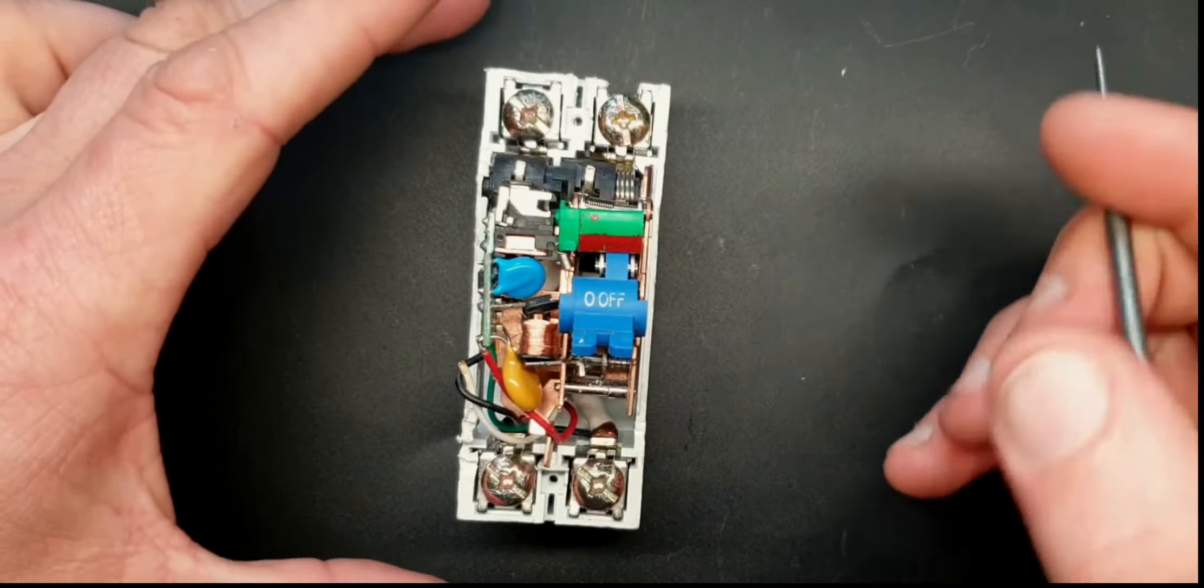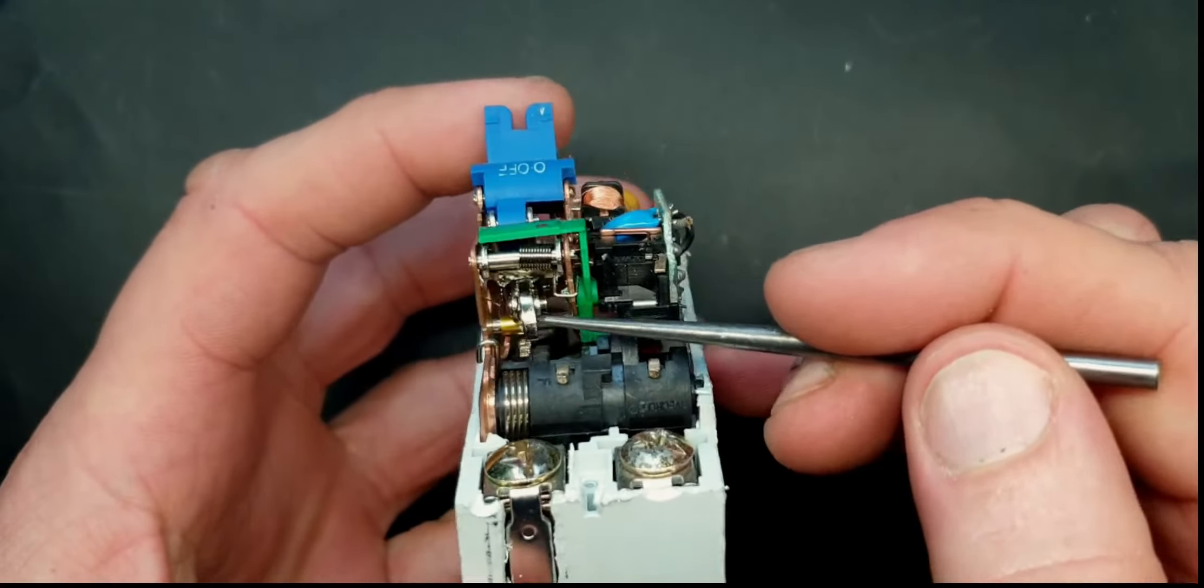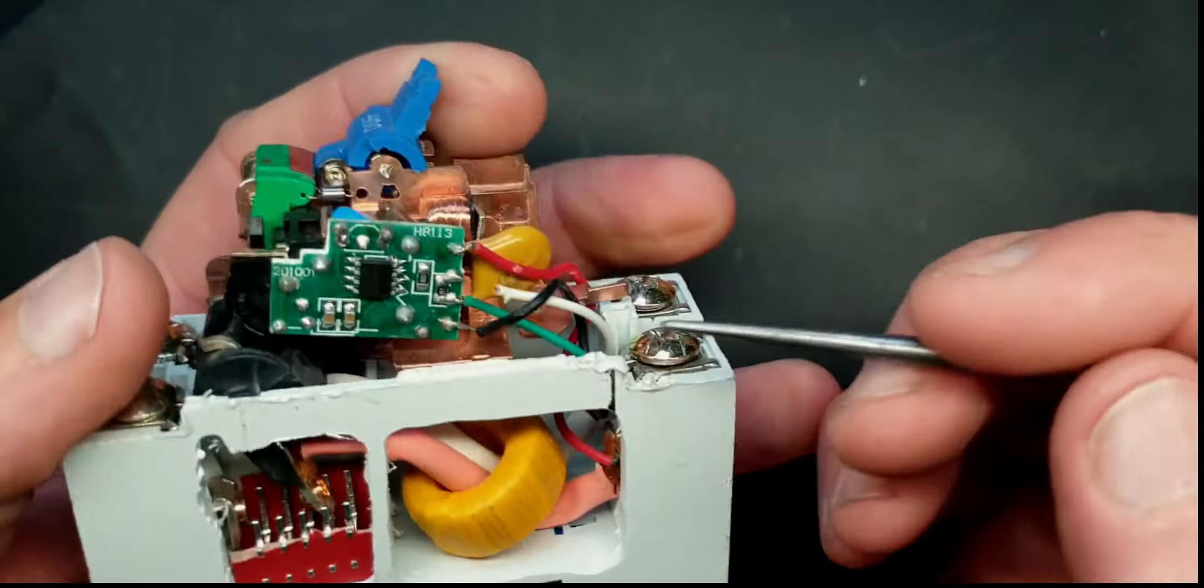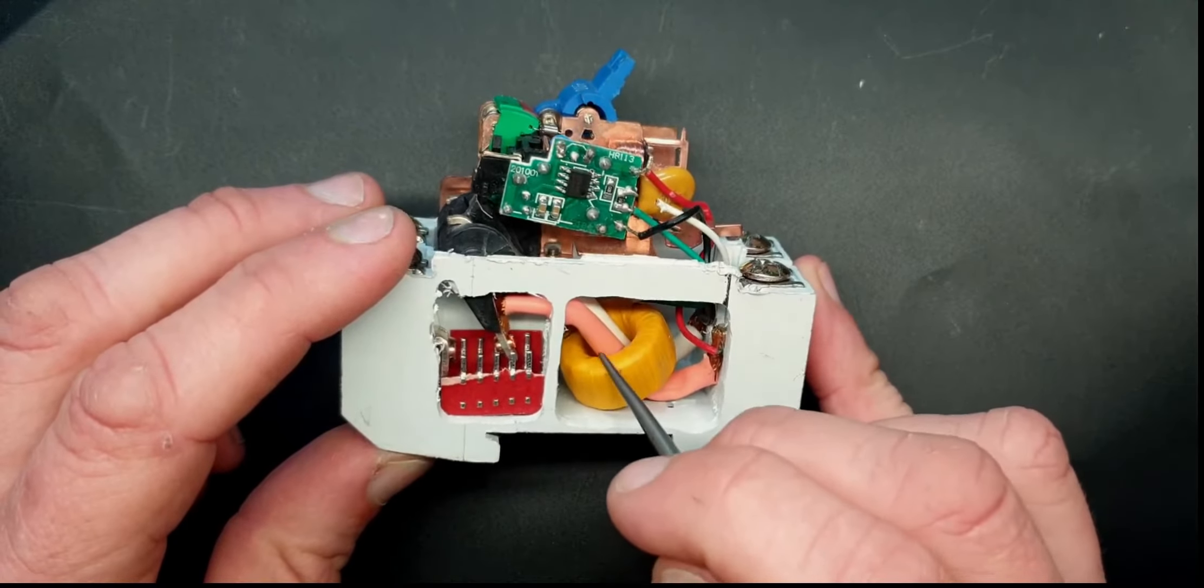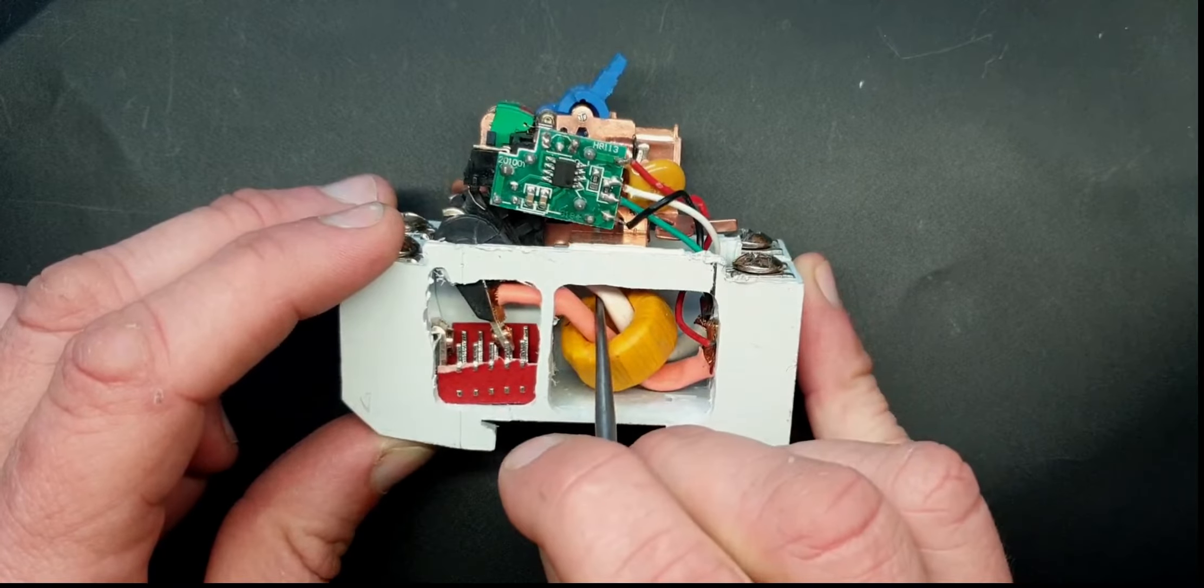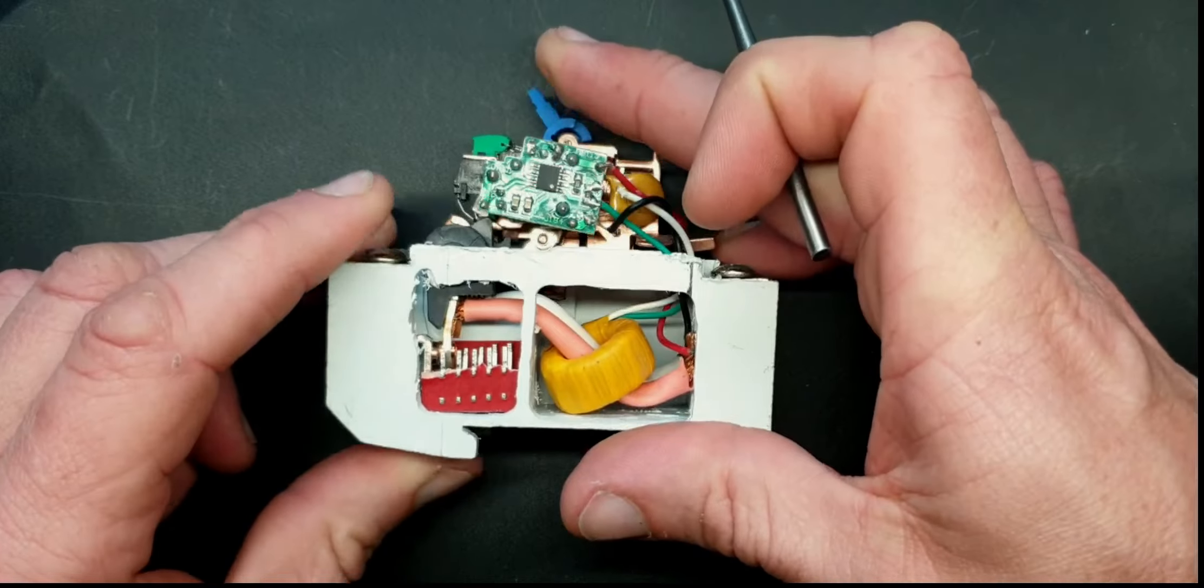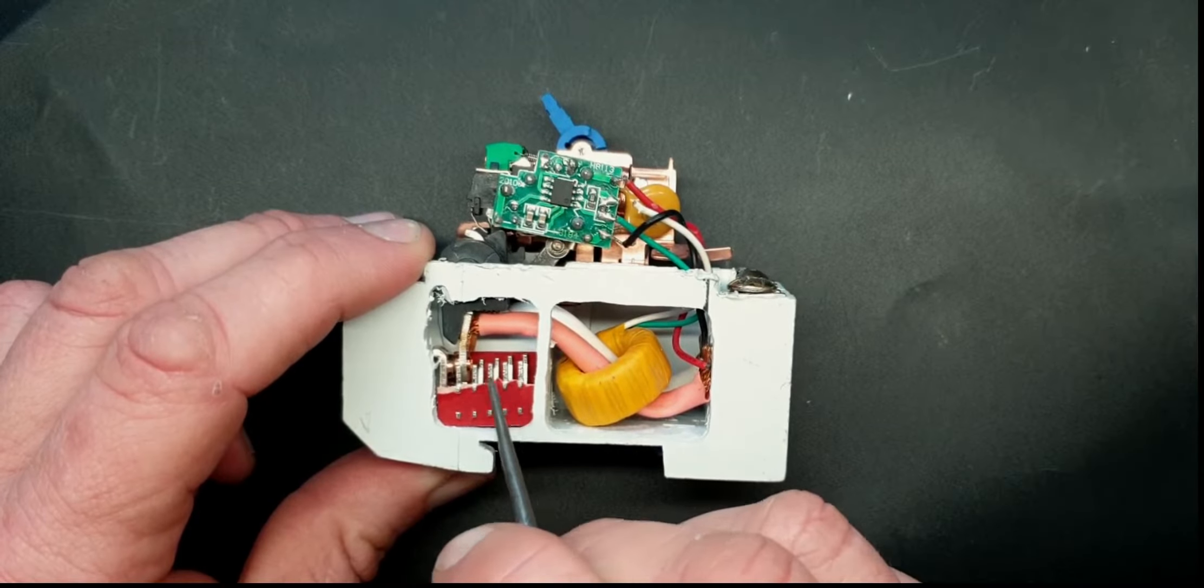A fair bit of stuff goes on in one of these. In here you've got your switch mechanism, your mousetrap mechanism, a bit of electronics here. You've got your incoming line, you've got your neutral at the back there, and this is your toroidal transformer.